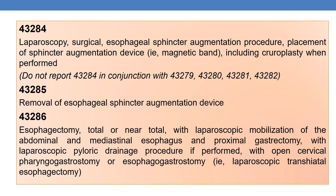The next CPT is 43284. It deals with laparoscopy, surgical, esophageal sphincter augmentation procedure, placement of sphincter augmentation device — for example, magnetic band — including cruroplasty when performed. Do not report 43284 in conjunction with 43279, 43280, 43281, and 43282.